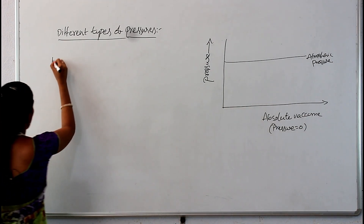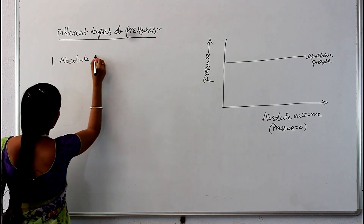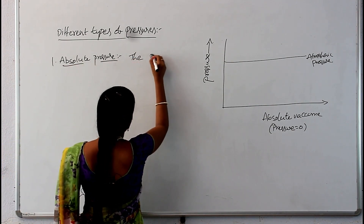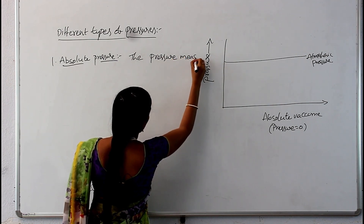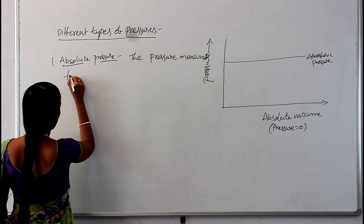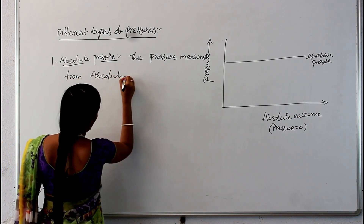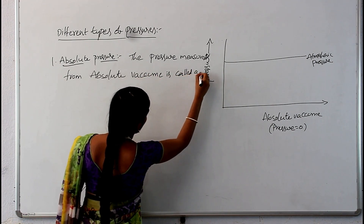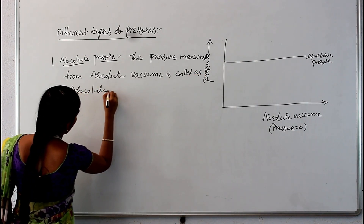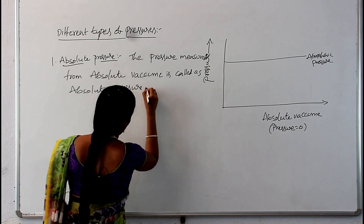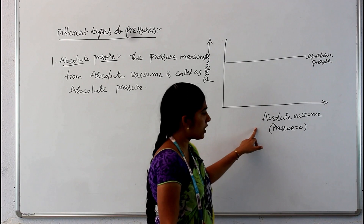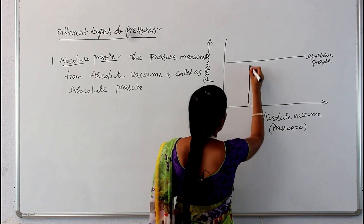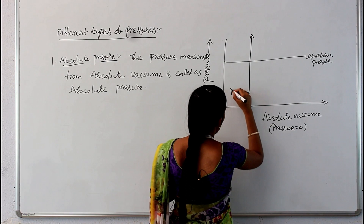First of all we see about the absolute pressure. The pressure measured from absolute vacuum is called absolute pressure. That means absolute vacuum is this point — if the pressure is measured from this point, then we call it as the absolute pressure. The pressure starts from absolute vacuum; this is absolute pressure.